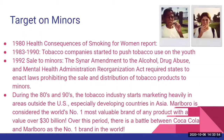The minimum age to buy cigarettes was raised from 16 to 18 in 1990 because of the large population of minors buying cigarettes. In 1992, the Synar Amendment to the Alcohol, Drug, Abuse, and Mental Health Administration Reorganization Act required states to enact laws prohibiting the sale and distribution of tobacco products to minors. During the 80s and 90s, the tobacco industry also started to market heavily in developing countries, especially in Asia. By this time, Marlboro was considered the most valuable brand of any product, with a value over $30 billion, and there was actually a competition between Coca-Cola and Marlboro for the number one brand in the world.